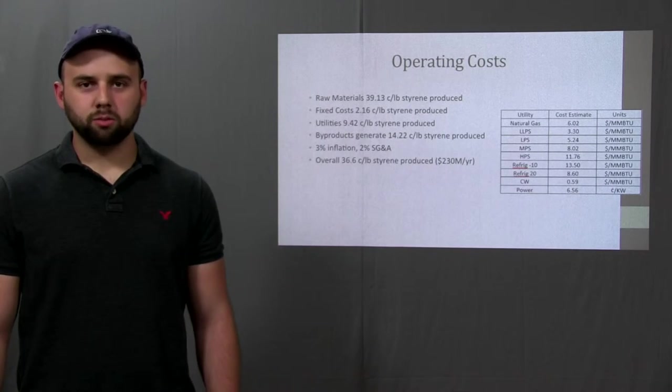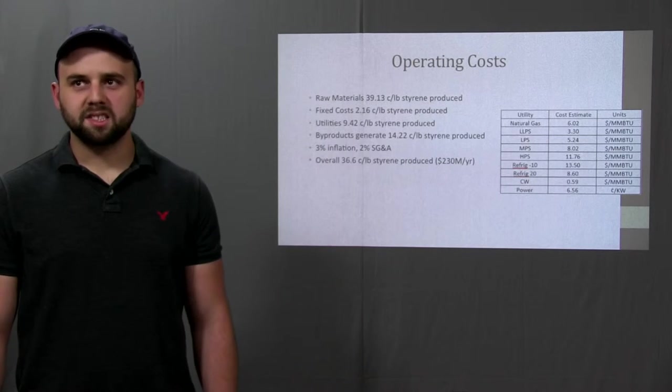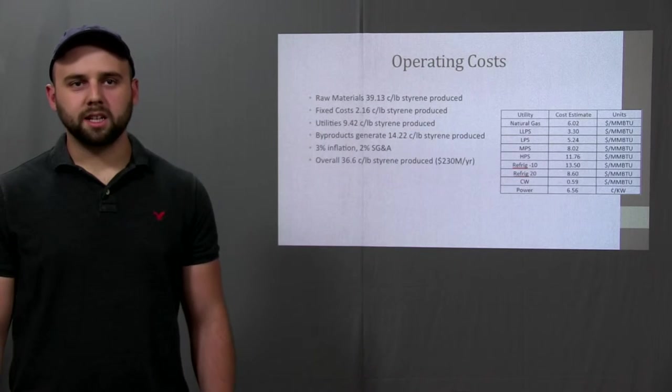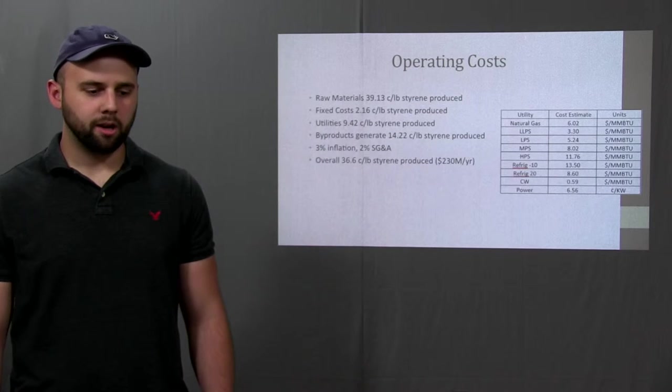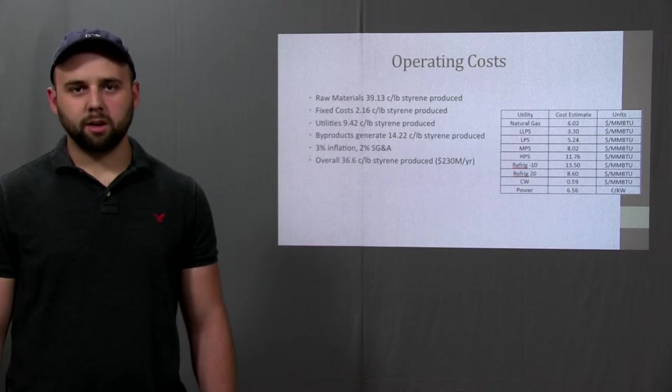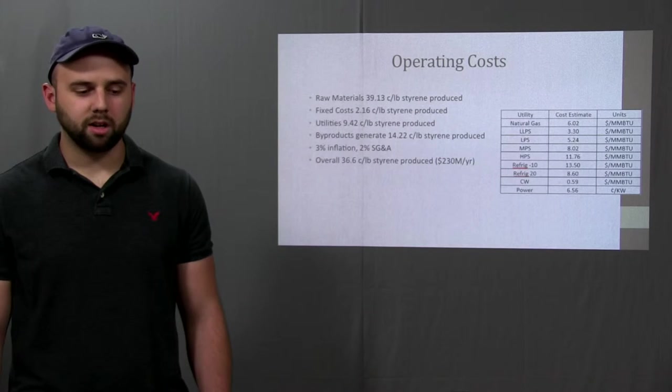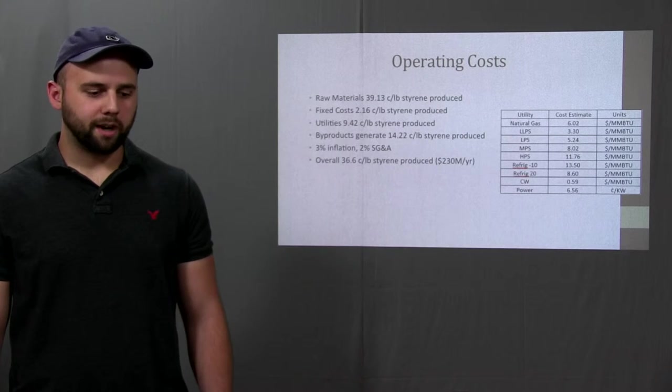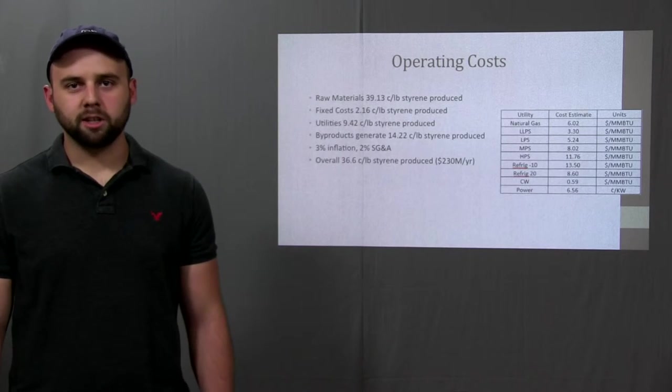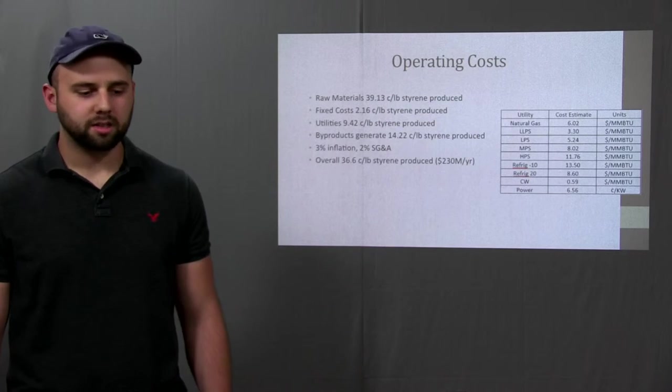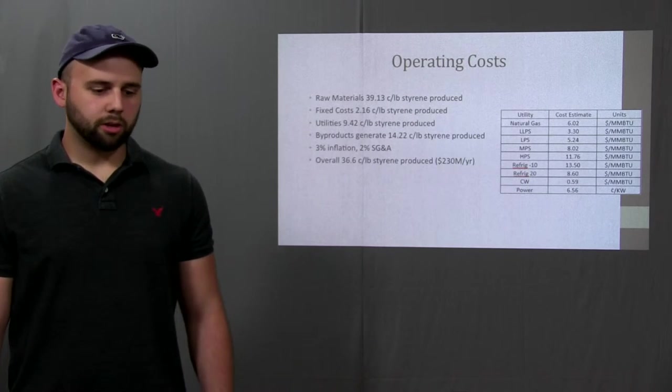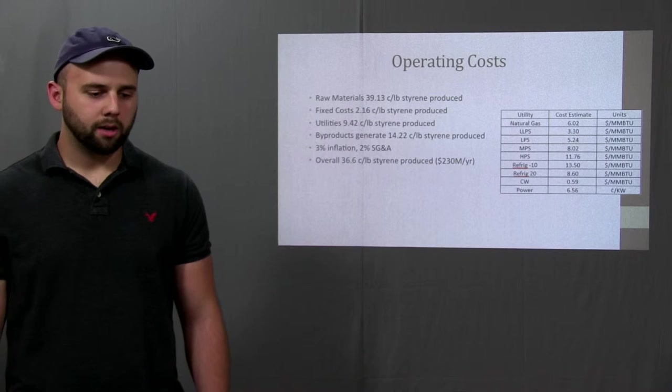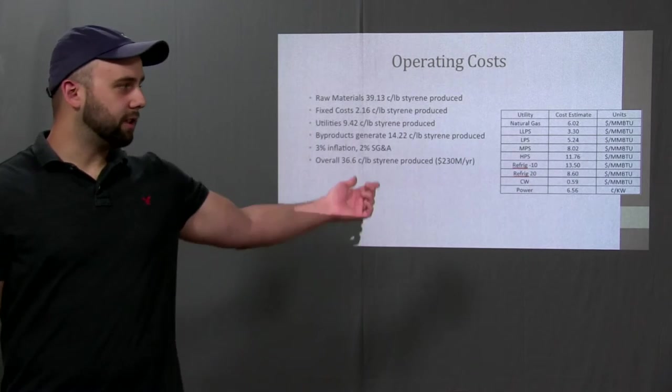Fixed costs included labor. We estimated 15 laborers with a combined salary and benefits of 85,000 dollars a year. It also included overhead which was estimated at 1.5 times the cost of labor. It included repair and maintenance estimated at 1.5 percent of the total capital cost. It included insurance estimated at 0.5 percent of the capital cost and then included property tax. Utilities included low pressure, medium and high pressure steam, oil, and electrical power. The individual prices of these are pictured in the table here.